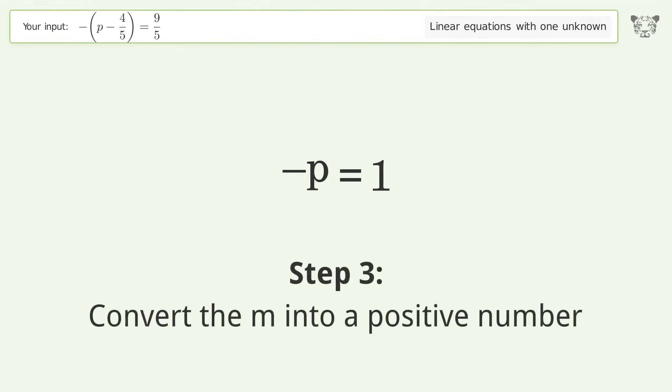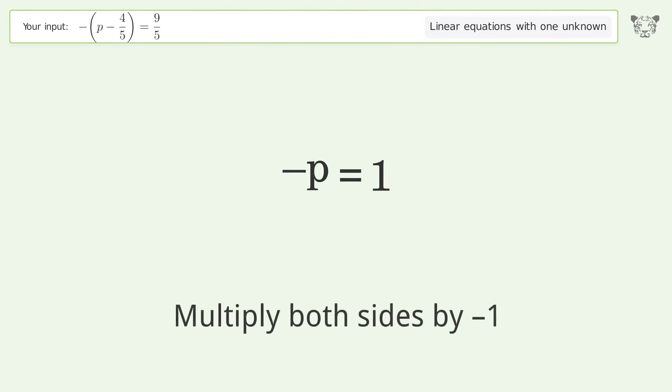Convert the term into a positive number. Multiply both sides by negative one. Remove the ones.